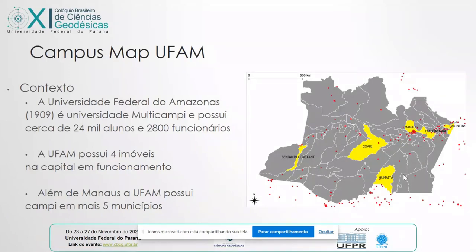In our context at the university, we have about 24,000 students and more than 2,800 employees, spread across six campuses. This campus of Manaus is divided into four buildings, while the largest is the campus where we find ourselves — the campus of Senado Arthur Vigílio Filho, or Neto. We also have a campus in five more municipalities, which are highlighted on the map.